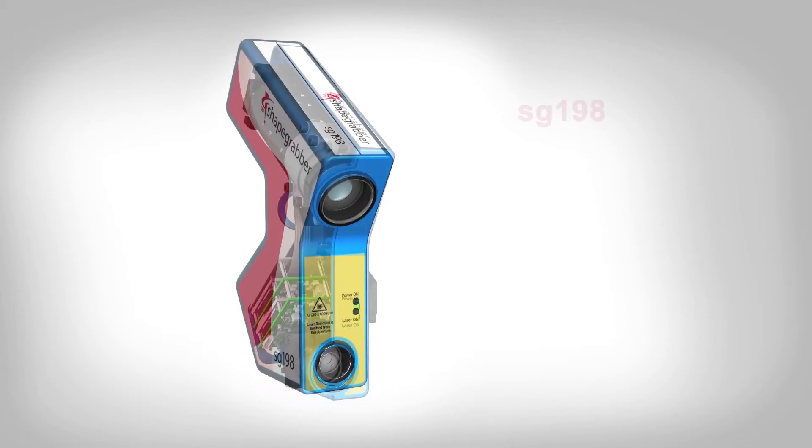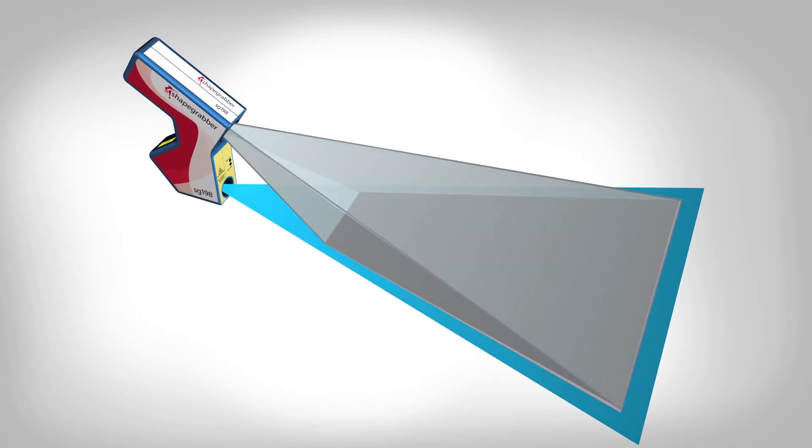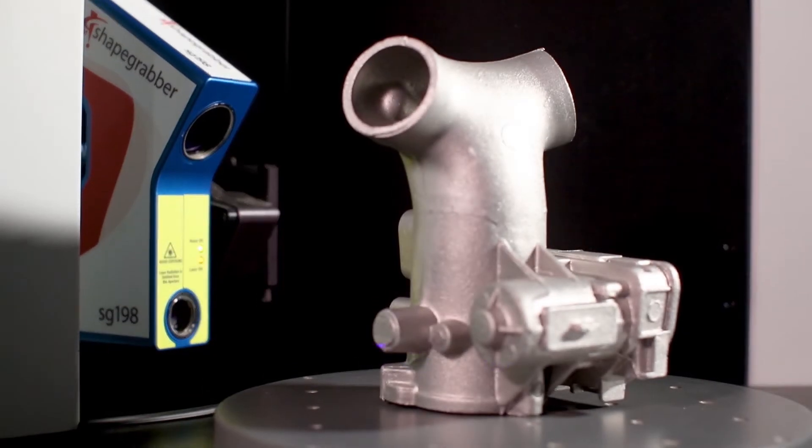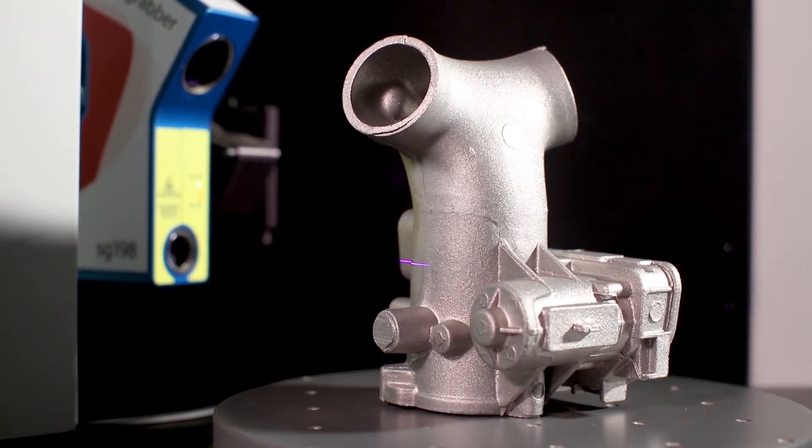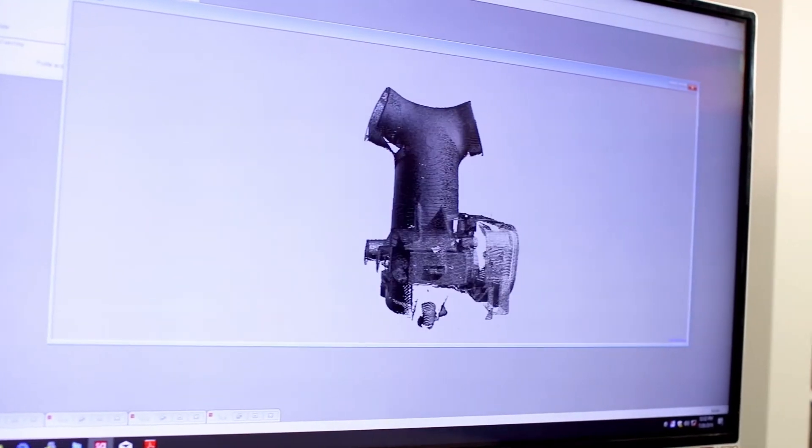The SG198 relies on QVI's over 70 years of experience designing optical systems for precision measurement. The proprietary blue light laser projector generates a thin, straight and uniform line resulting in extremely low noise data for accurate measurement and analysis.